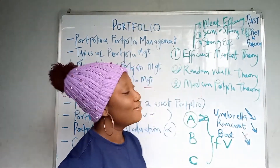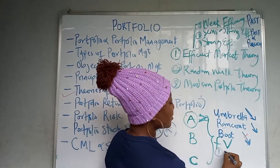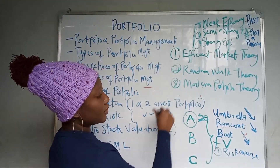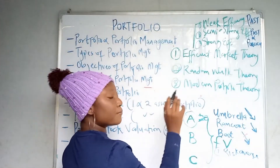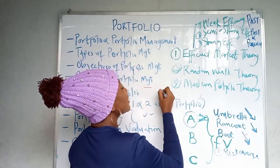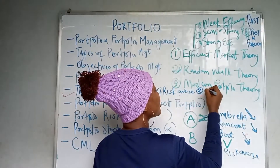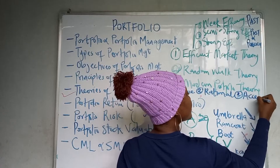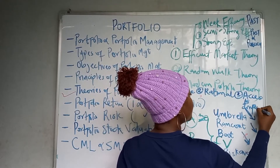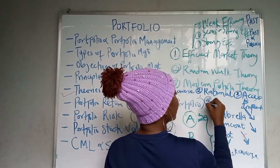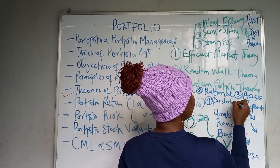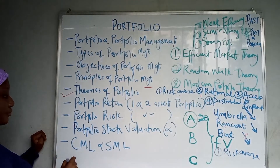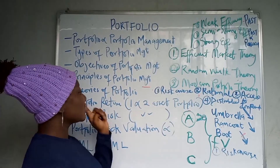The modern portfolio theory is governed by four assumptions. Number one: all investors are risk averse. Number two: investors are rational. Number three: all investors have access to the same information. Number four: returns are normally distributed. These four assumptions underpin the entire framework of the modern portfolio theory.